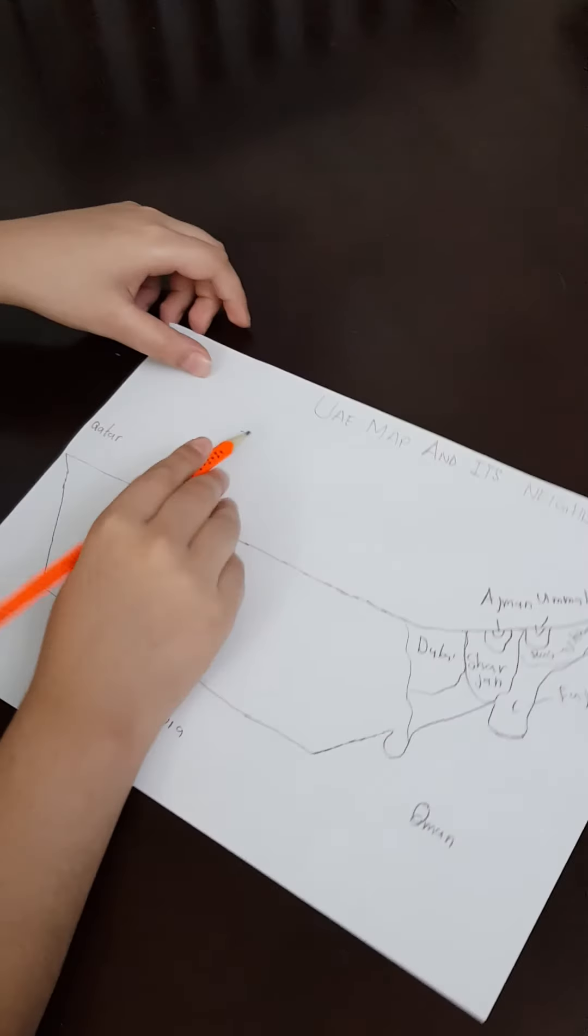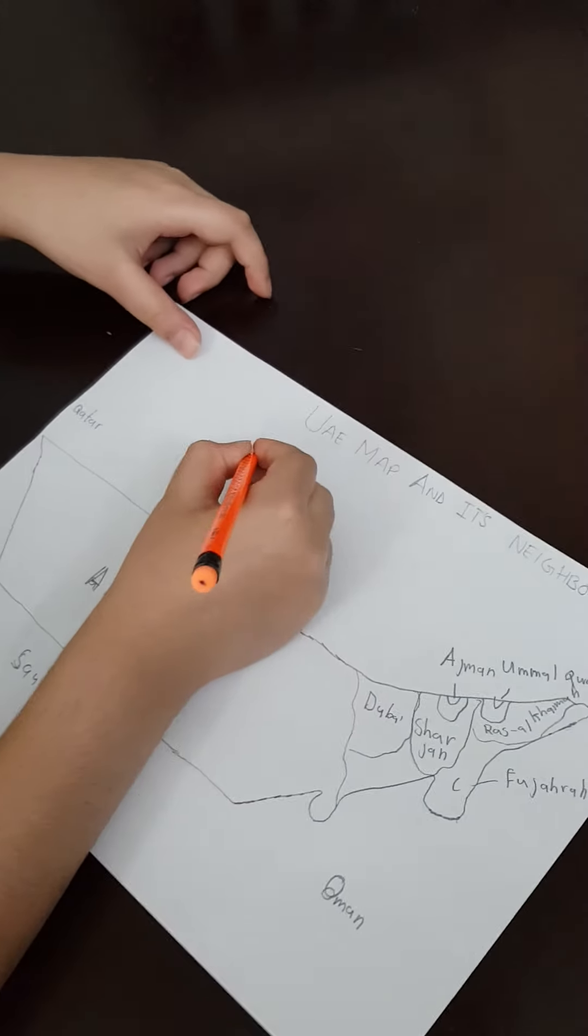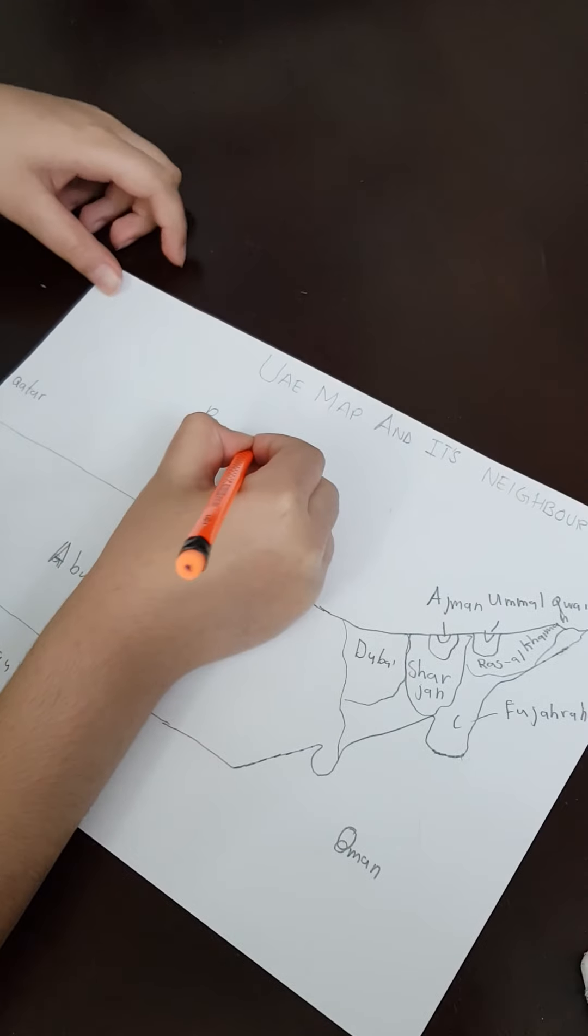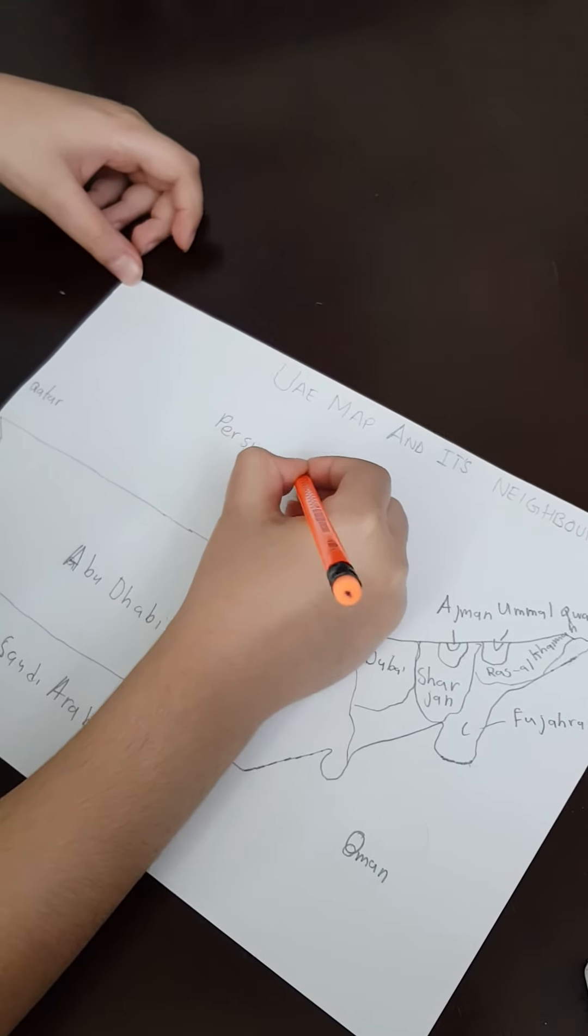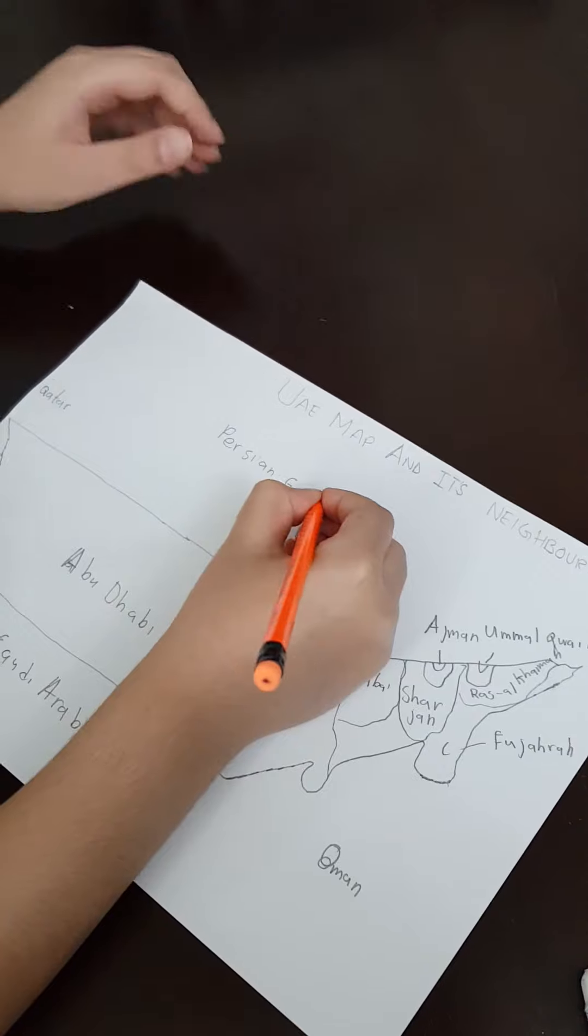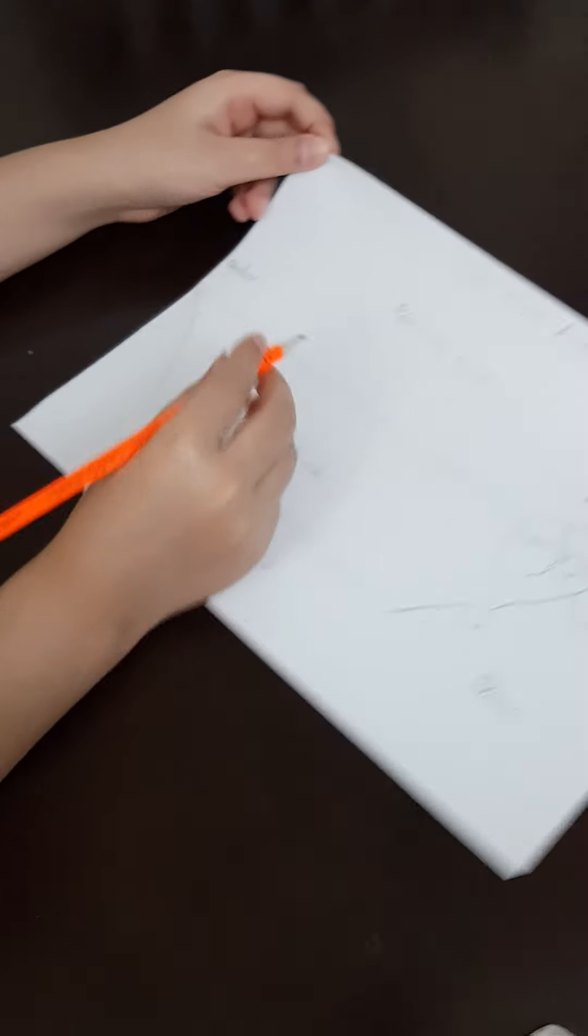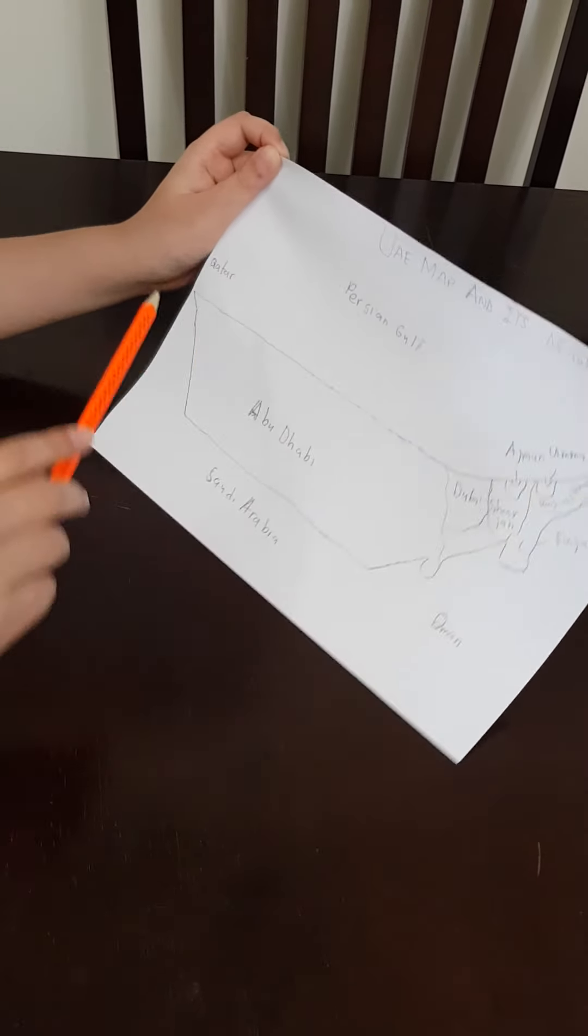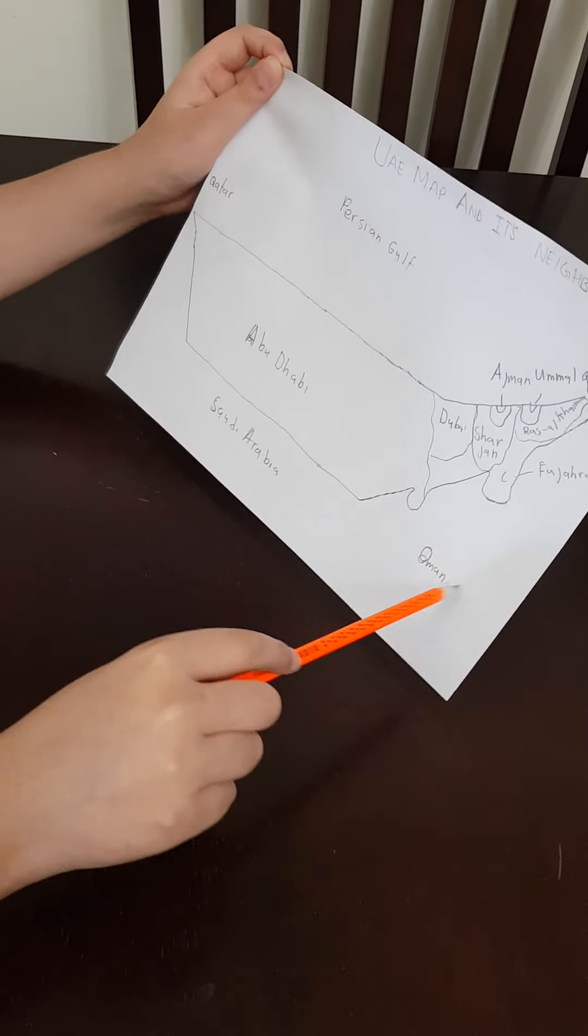Guys, these are all, and I forgot to mention that here's the Persian Gulf. You can even say Persian Sea, but mostly I'm going to say Persian Gulf. So guys, now I told you the UAE map, the cities, a few facts, and the neighboring countries.